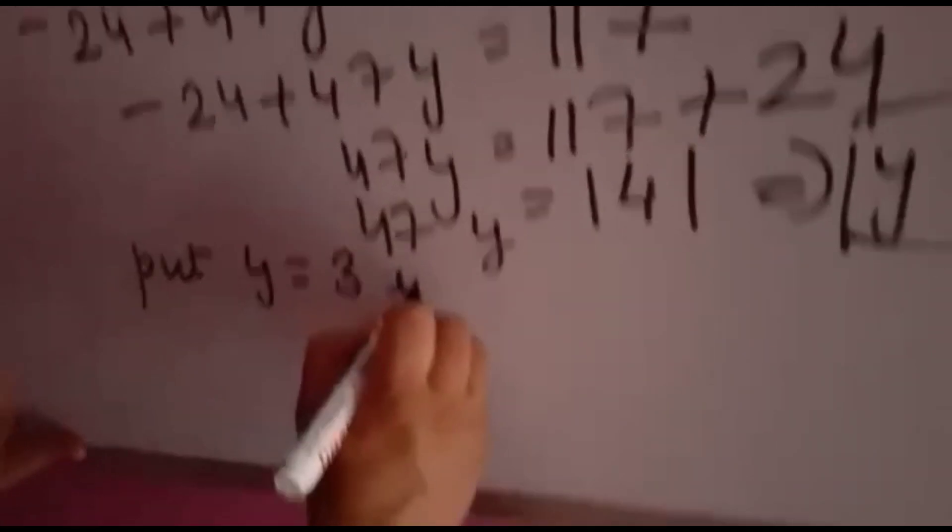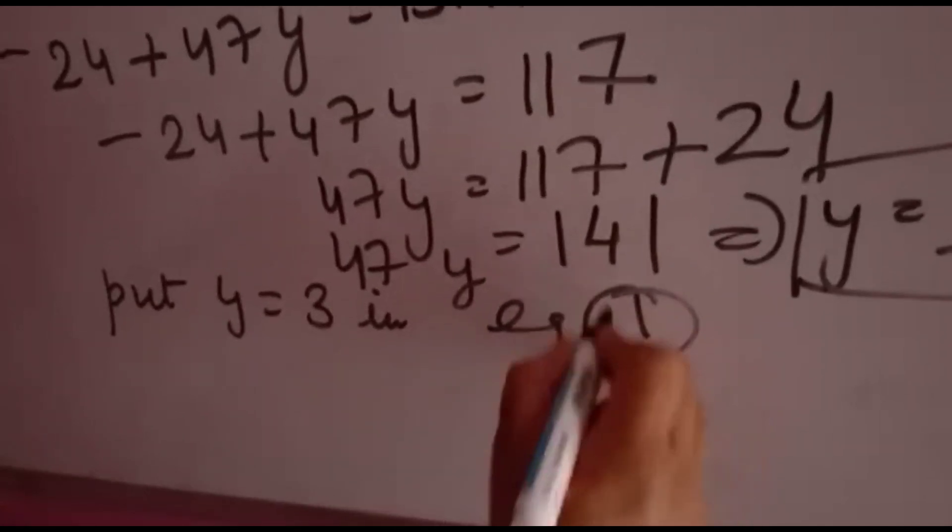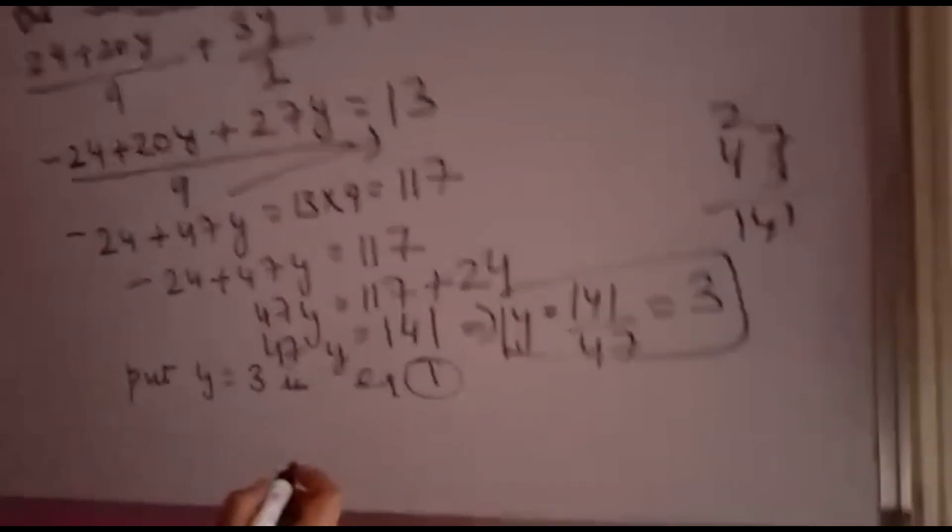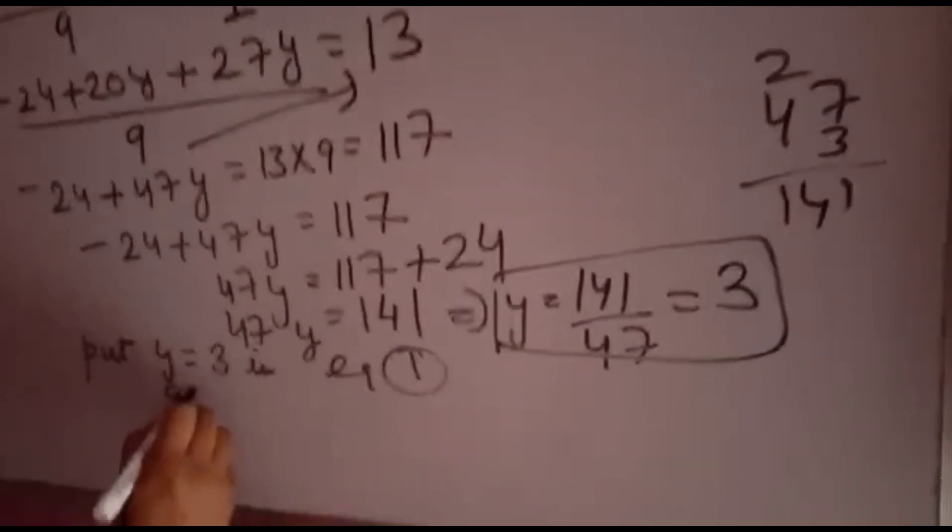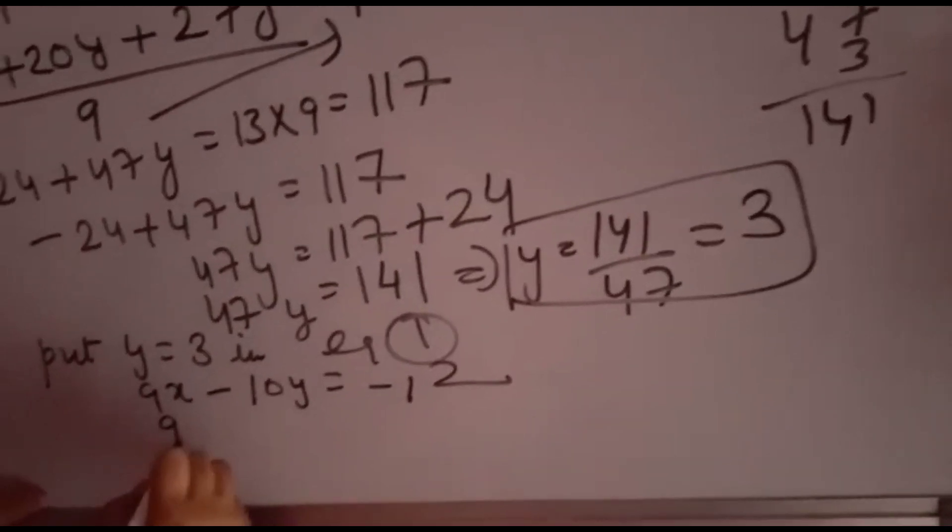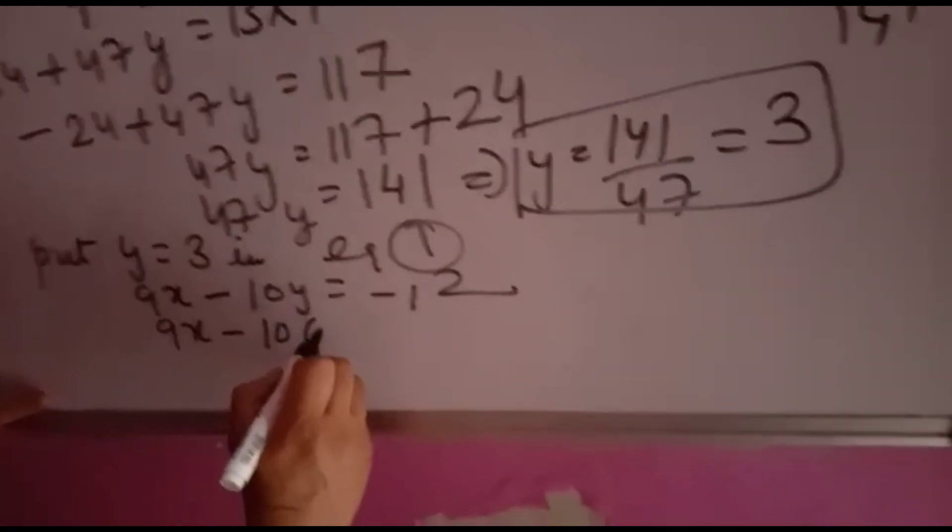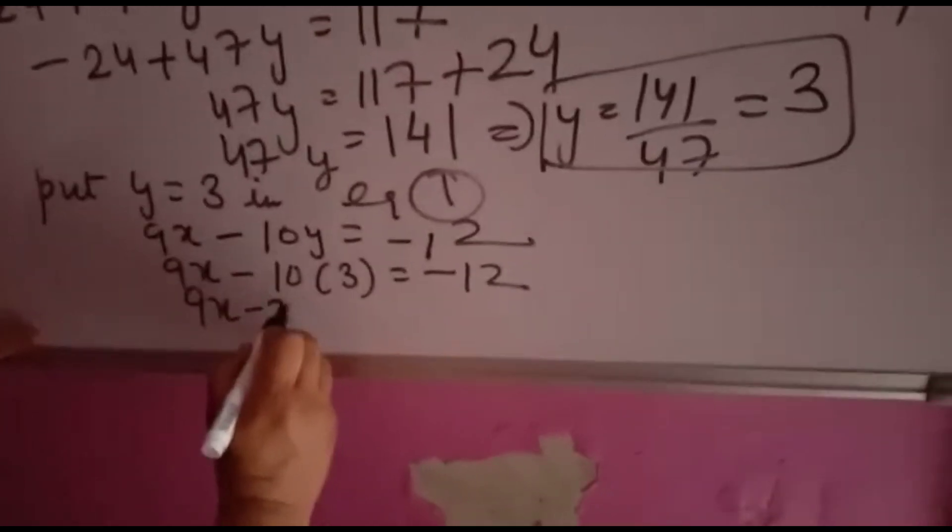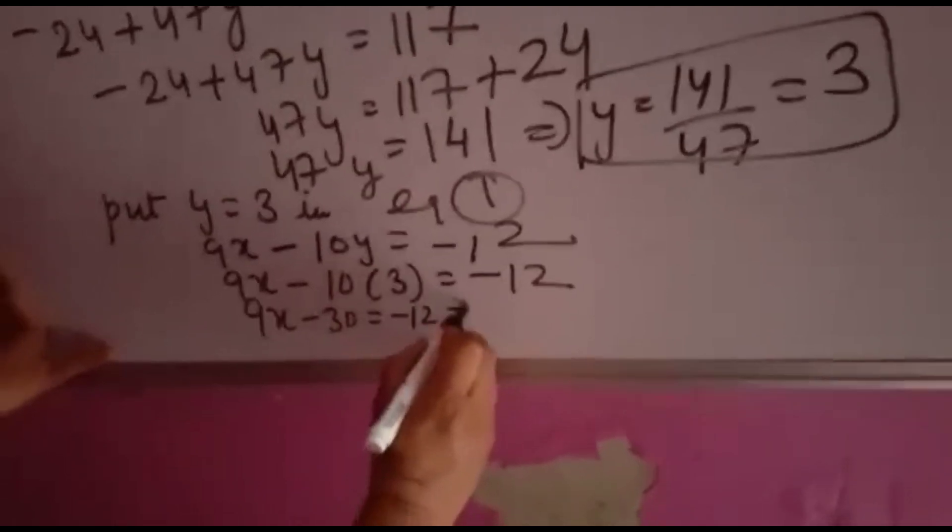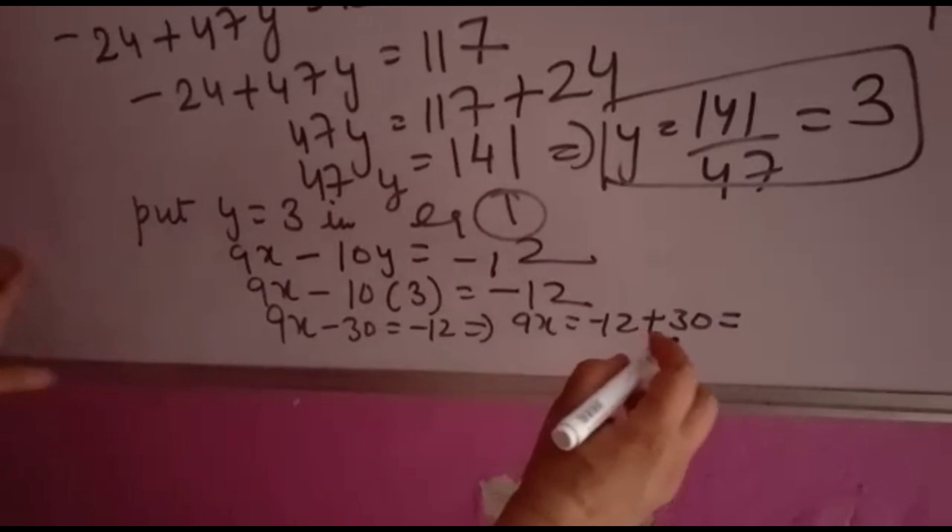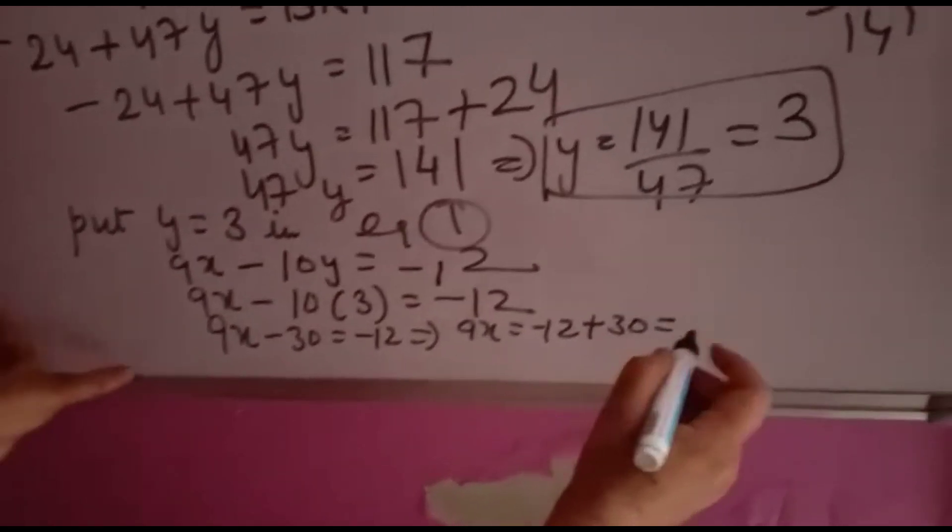That you will put in equation first. Equation number first was 9x minus 10y is equal to minus 12. So you will put 9x minus 10 into y, y is 3. You will put here 3. So 9x minus 30 is equal to minus 12.